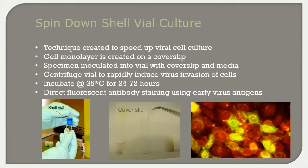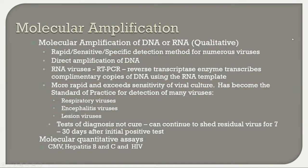Spin-down shell vial culture was created to speed up viral cell culture. Instead of just placing the cell monolayer in a tube, you put it on a cover slip inside a shell vial with media. The specimen is inoculated into the vial, the vial is centrifuged rapidly to induce virus invasion of the cells, then incubated at 35 degrees centigrade for 24 to 72 hours. Direct fluorescent antibody staining is used on the cover slip to look for early virus antigen of the target virus.